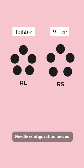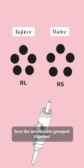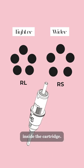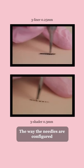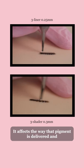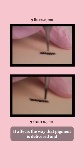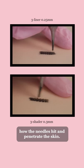Needle configuration means how the needles are grouped together inside the cartridge. The way the needles are configured can affect our control and accuracy. It affects the way that pigment is delivered and how the needles hit and penetrate the skin.